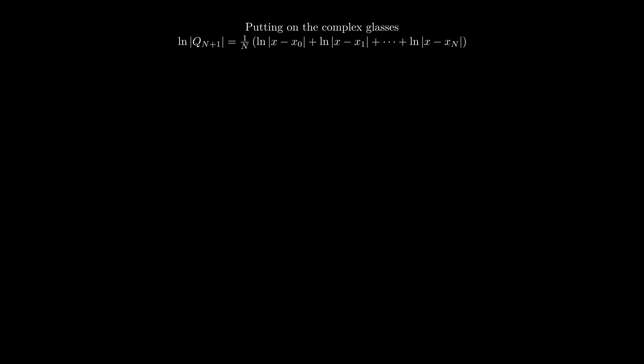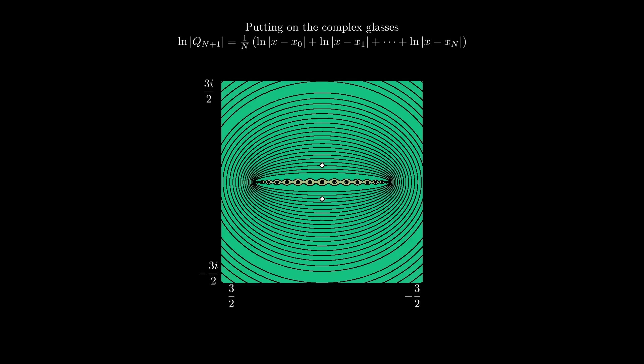What two-dimensional universe, you might ask. Why the complex plane, of course. We perform a contour plot of the potential and we see that for the Chebyshev nodes, the contours are narrow and contain all the interpolation nodes. We superimpose the poles of the Runge function in white.